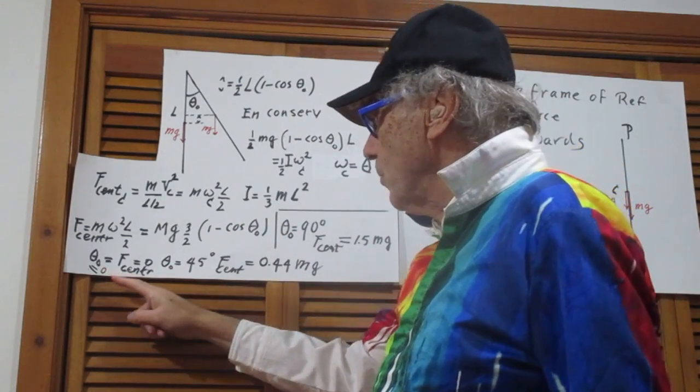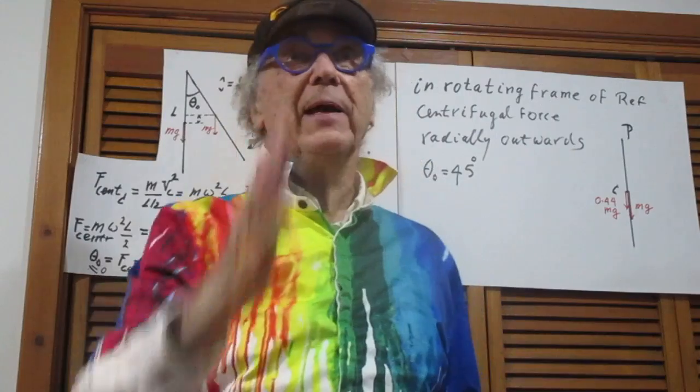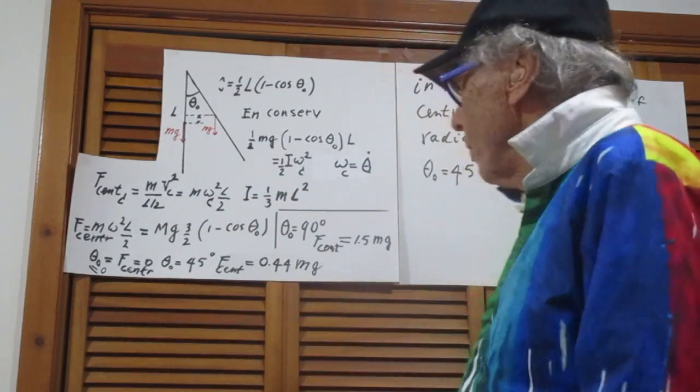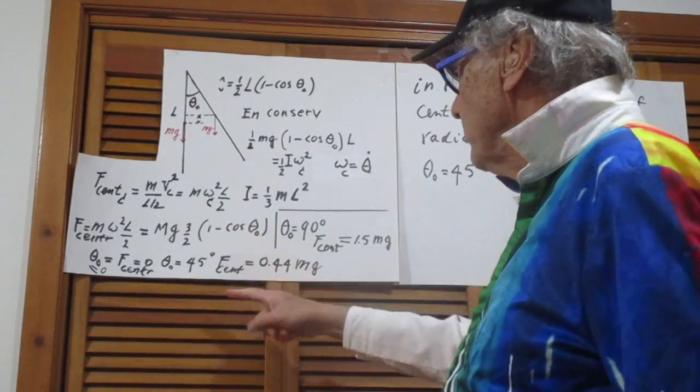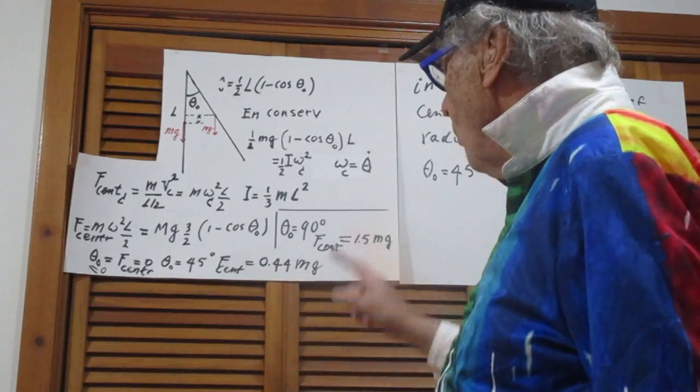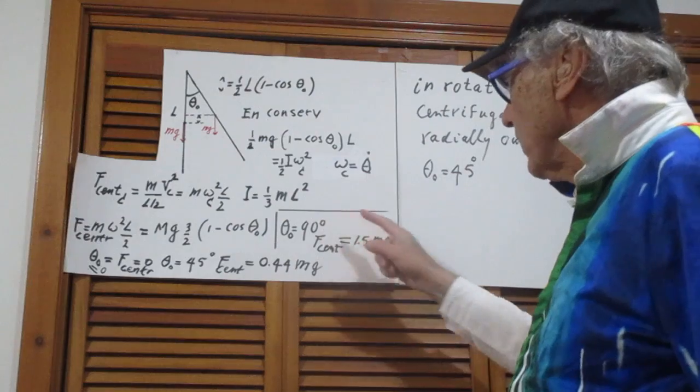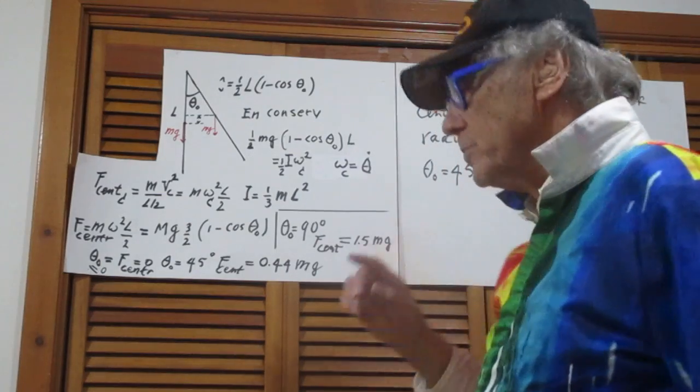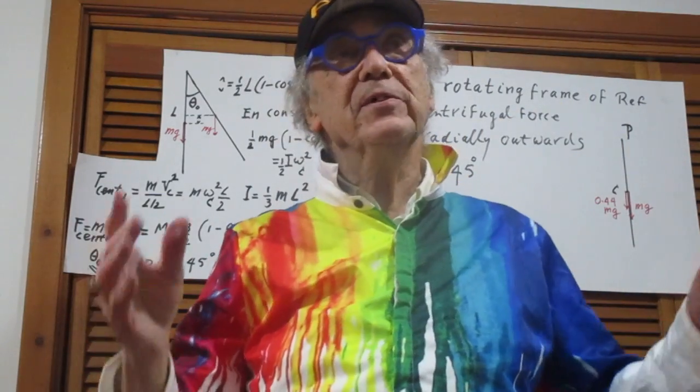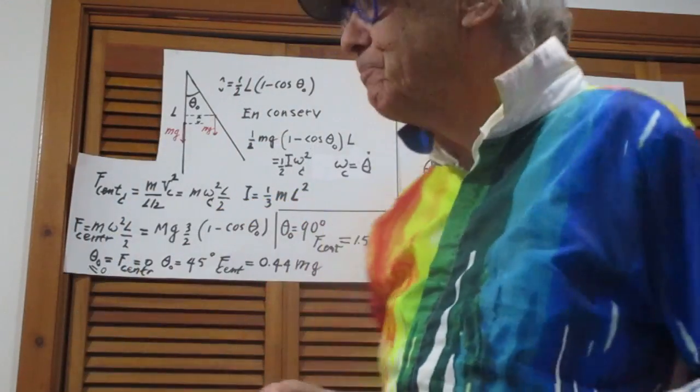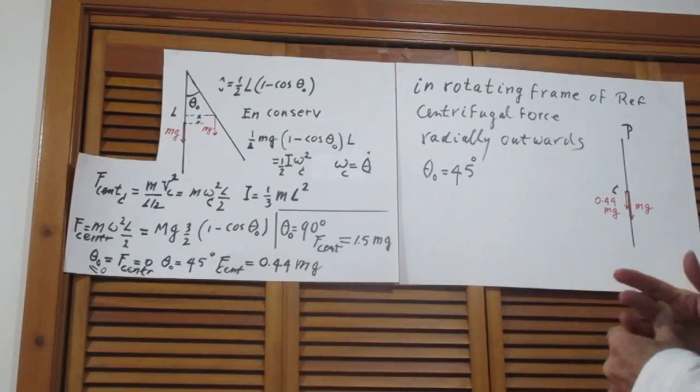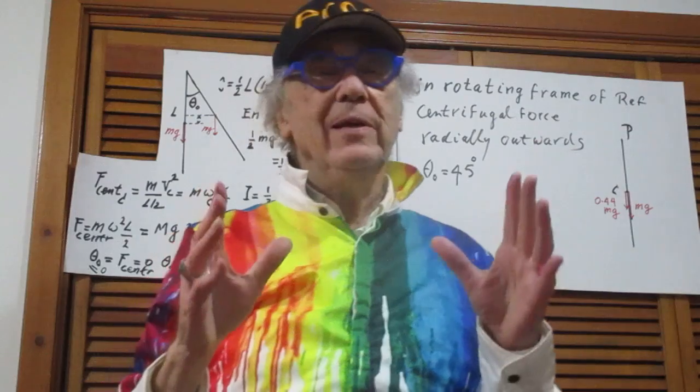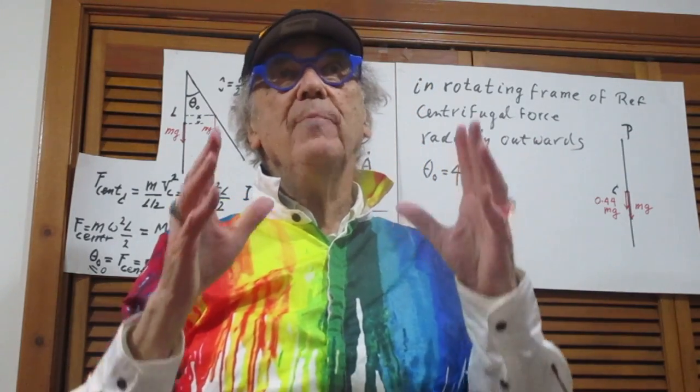If theta zero is zero degrees, then there is no centripetal force, because it was hanging there to start with, and it never moved. So there was no centripetal force. If theta is 45 degrees, and you put that in this equation, then you find that the centripetal force is 0.44 Mg. And if theta zero is 90 degrees, so you would start with the rod here, and you would let it go, then the centripetal force is 1.5 Mg. Check my calculations. I did it very fast. It is possible that I slipped up somewhere.